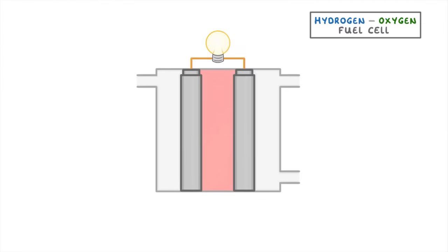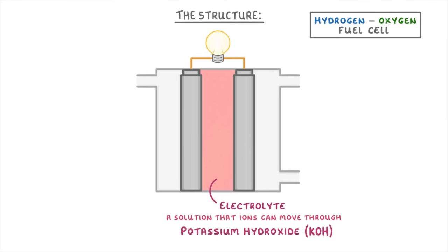The setup of these cells is kind of complicated, so let's run through the structure first, and then we'll see how it works after. In the very centre, we have the electrolyte, which is a solution that ions can move through. There are lots of different types of electrolytes, but one of the most common is potassium hydroxide.